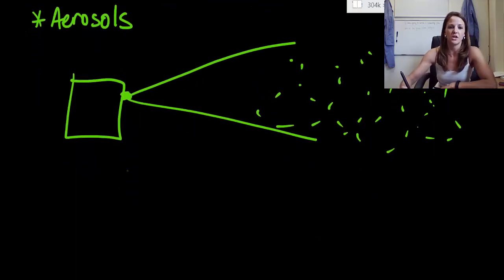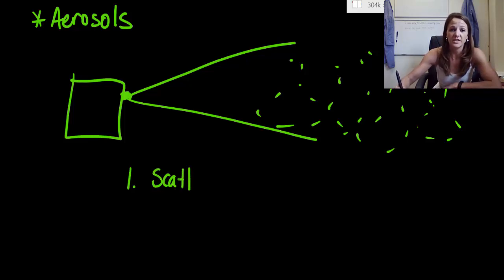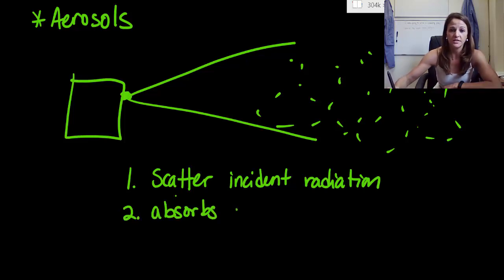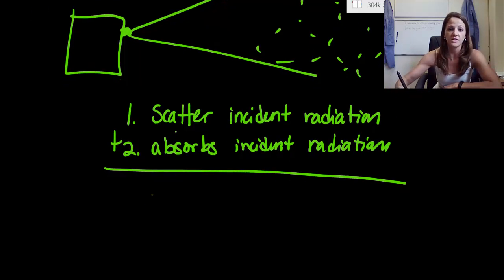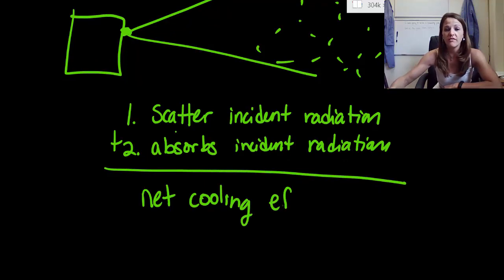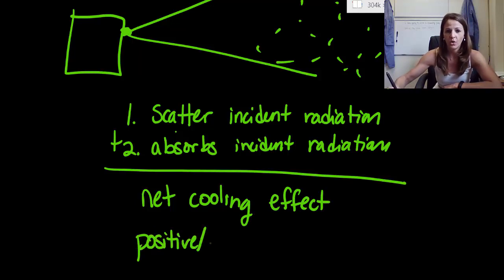Alright, so here's two things we need to know every time we talk about aerosols. The first thing, the particulate matter that they shoot out actually scatters incident radiation from the sun. And the second thing is that luckily it absorbs this incident radiation. So it scatters it and absorbs it. And so when we put those two together, if this was a simple math problem, we could just add the two up. What that actually means is that we have a net cooling effect.